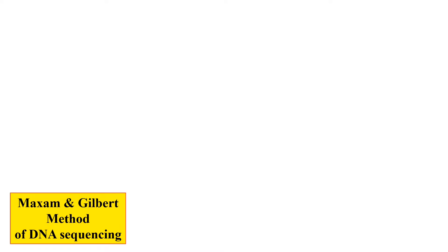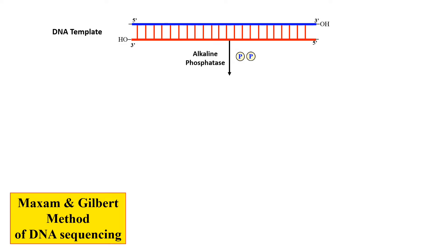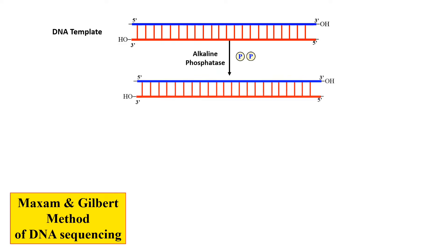For the procedure, first we take the template DNA — the DNA whose sequence we want to know. As you know, DNA has phosphate groups attached to both its 5' ends, generally termed terminal phosphate groups. In the first step, using the enzyme alkaline phosphatase, we remove these terminal phosphate groups from the 5' ends, because we want to label our DNA fragment with a radioactively labeled molecule.